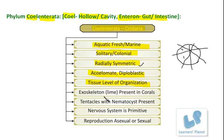The next point is about the exoskeleton. In these organisms belonging to Coelenterata, generally exoskeleton is not present. But in some organisms it is present — like corals. In corals, the exoskeleton is present and it is made up of lime.